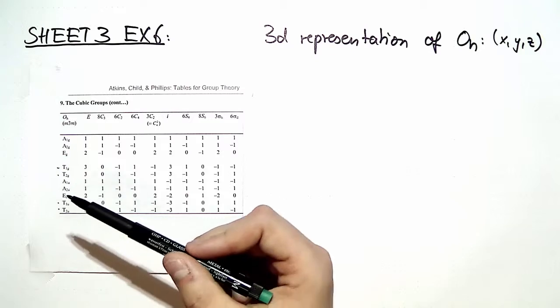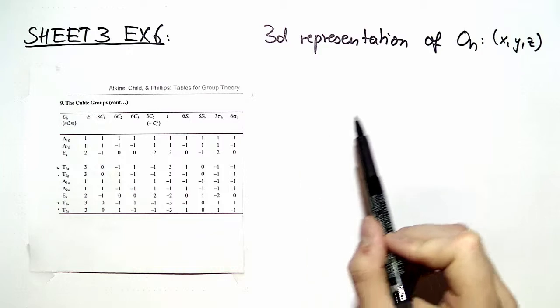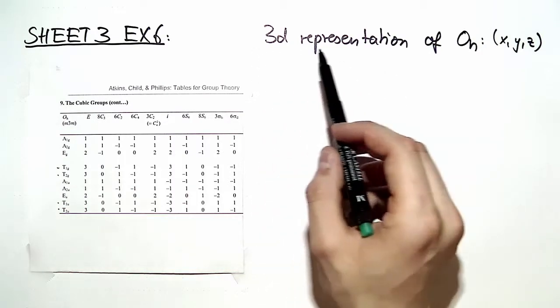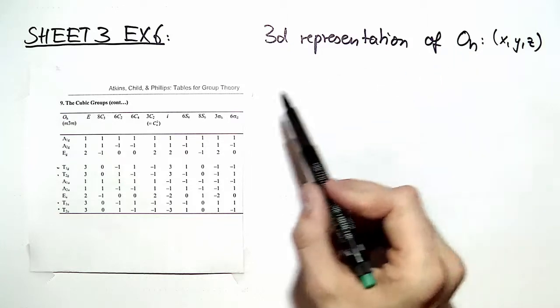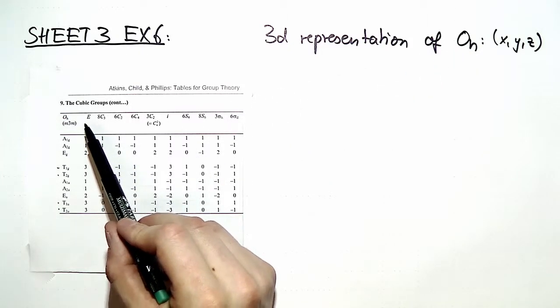So how do we proceed? Of course, you can identify these representations by computing characters, but we want to do it smart. First, we know that this three-dimensional representation must have a character of three when evaluating the identity element.